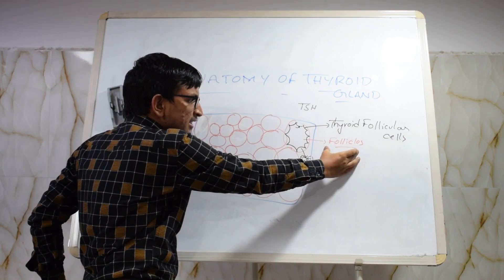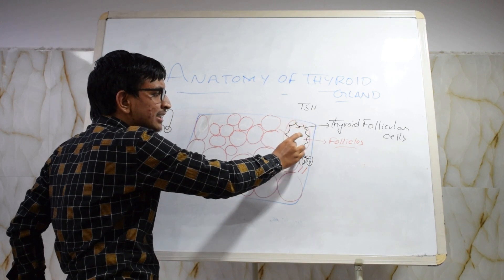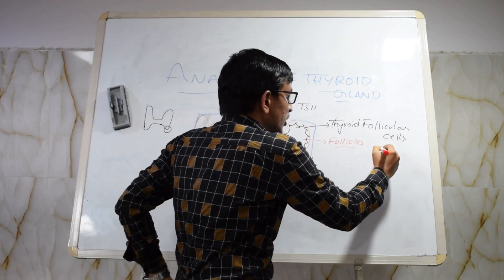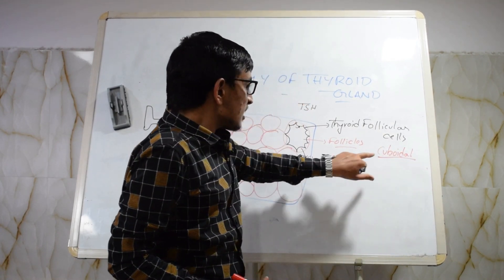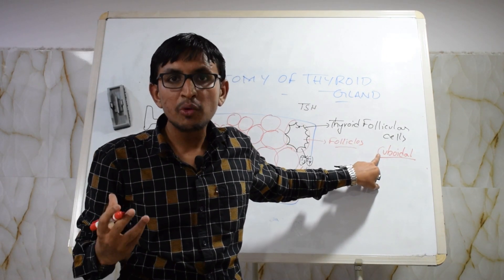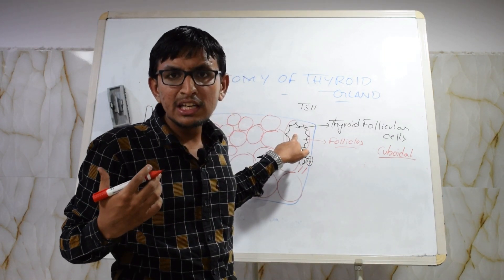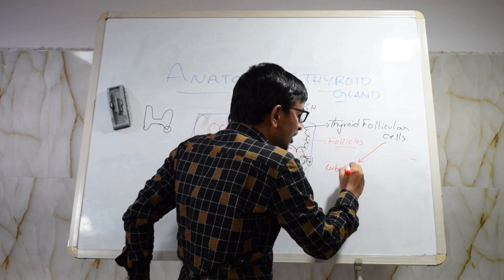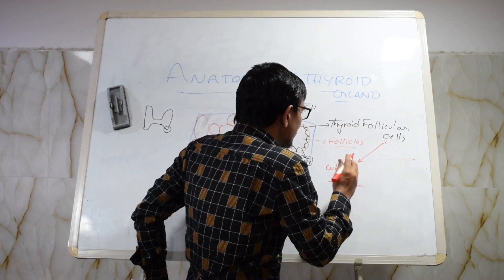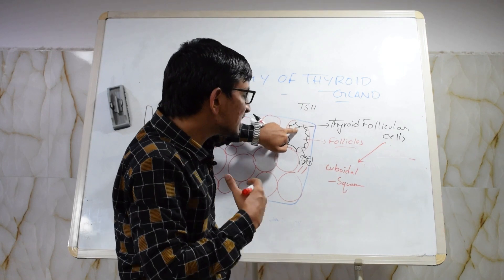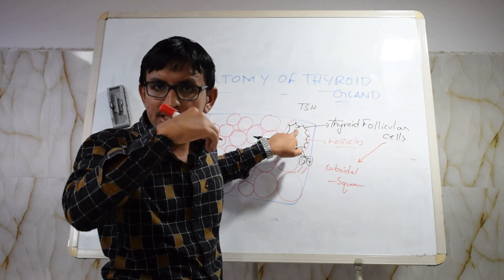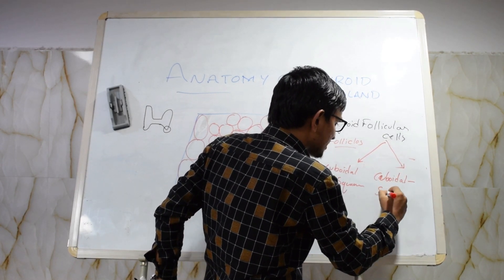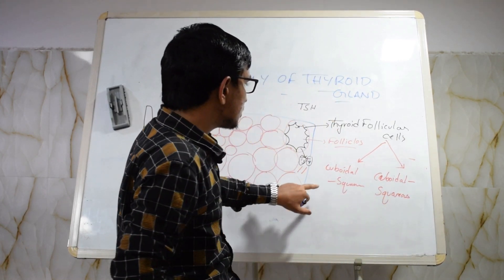The thyroid follicular cells are epithelial cells. Their shape fluctuates depending on their activity state. When not actively secreting, they exist in a shape ranging from cuboidal to squamous. When TSH binds to the cell and they begin actively secreting hormones, the shape again ranges from cuboidal to columnar.